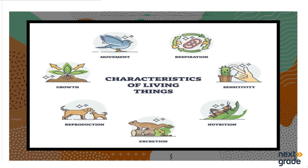All organisms or living things share some characteristics that make them different from non-living things. All living things share characteristics that set them apart from non-living things. For example, non-living things — like a stone or a wall — cannot breathe and cannot eat food. There are many qualities and characteristics that non-living things lack.